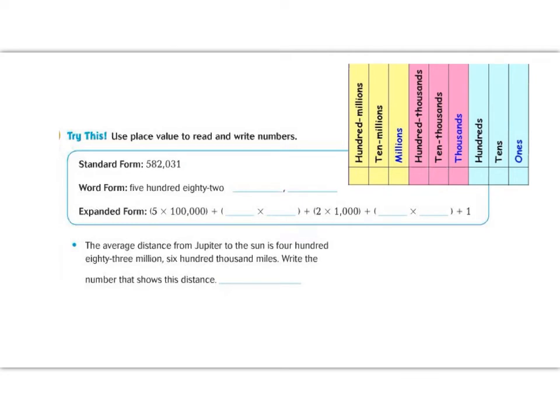Let's continue our lesson by doing the try this problem. It says, use a place value chart to read and write numbers. So I've gone ahead and inserted a place value chart on my page here. You can copy one down on your page to follow along. It says, we're going to use the standard form of this number, 582,031. So before I continue on, I'm actually going to go to my place value chart over here. And I'm going to fill in each number where its place value is worth.